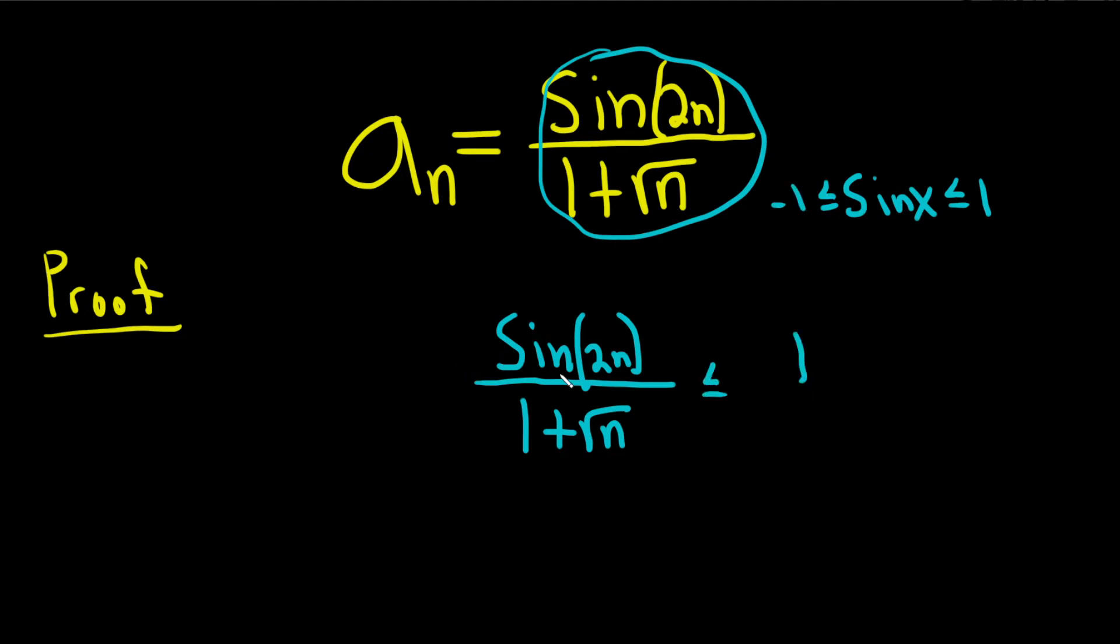Put a 1 here, like this. And then this would be 1 plus the square root of n, because you just replace this with 1. Likewise, you can do this. Put a negative 1 here, and then just keep the bottom piece, 1 plus the square root of n. So now we've squeezed it between two other sequences.